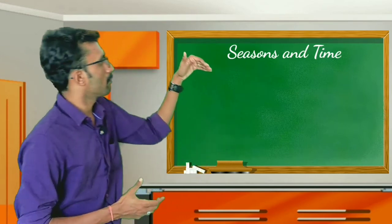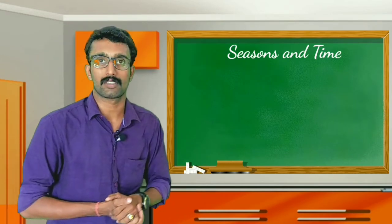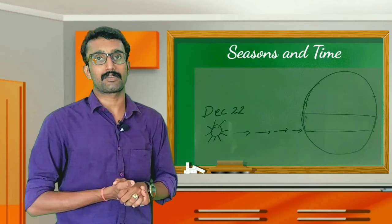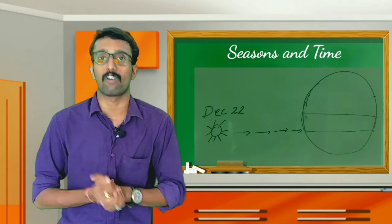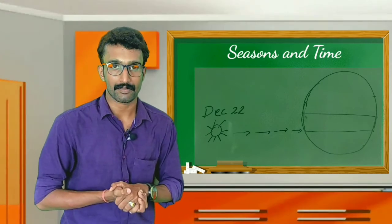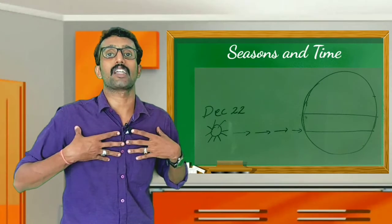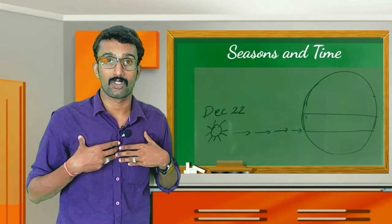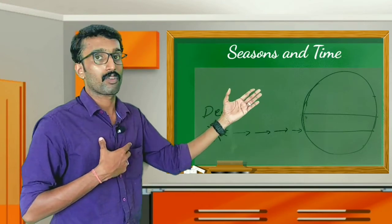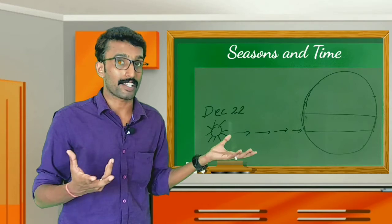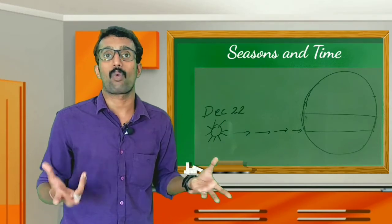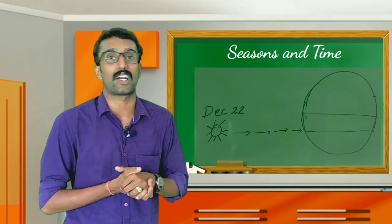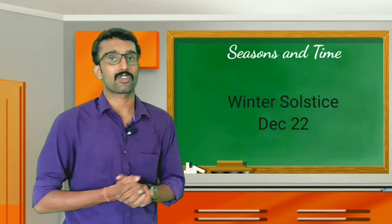After September 23rd, the sun is apparently shifting to the southern side and reaches over the Tropic of Capricorn on December 22nd. On this day, the southern hemisphere is receiving more sunshine than the northern hemisphere. So the southern hemisphere experiences the longest day, but the northern hemisphere experiences the longest night. This day is known as the winter solstice.